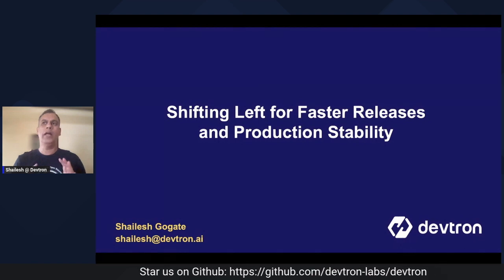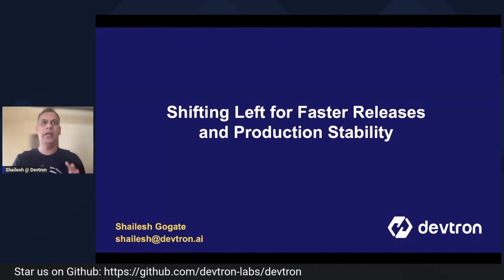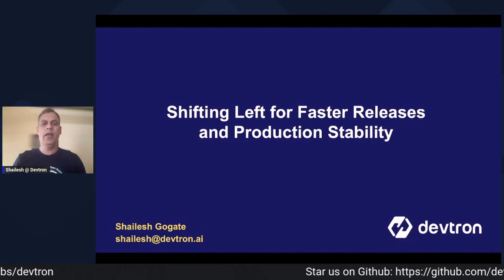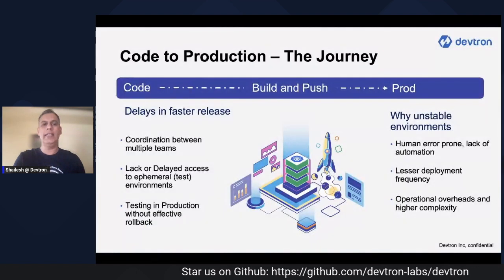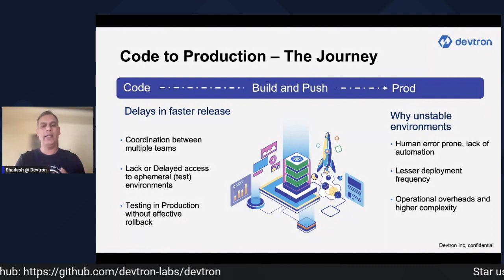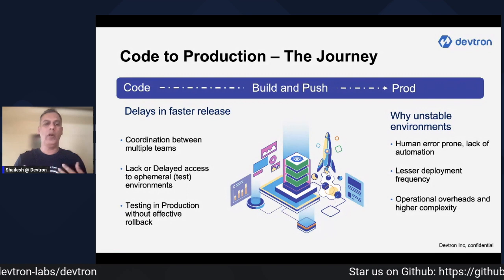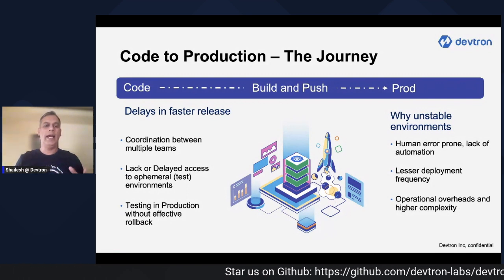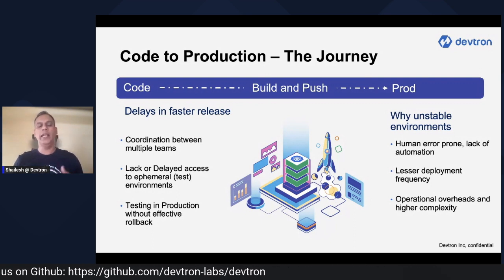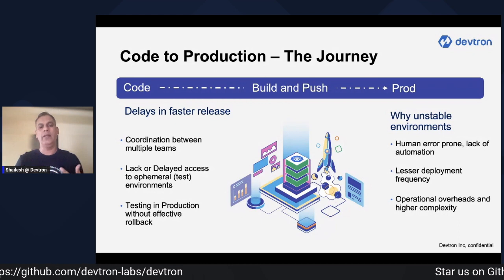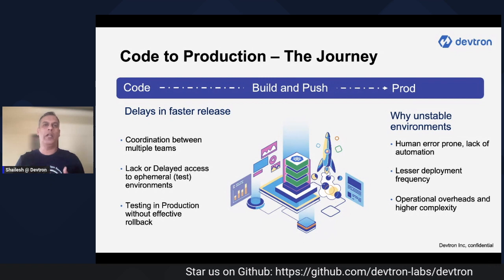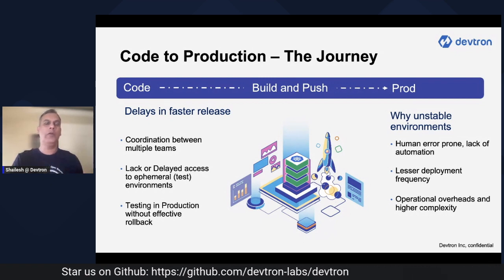The whole idea of shifting left is: how can I move more features to production faster? The challenges are multiple reasons for delays from a faster release point of view. You have to coordinate with multiple teams, there is delayed access between teams — for example, setting up ephemeral test environments or a basic testing environment — and then there is the question of how do you roll back if you move to production and the feature is not working, so you can quickly roll back to earlier versions.